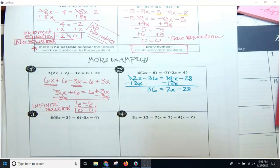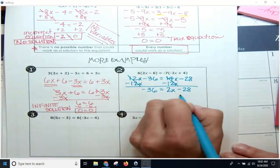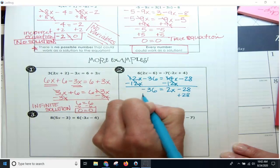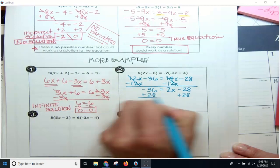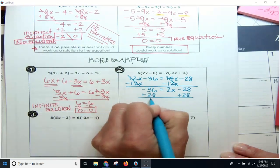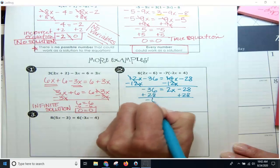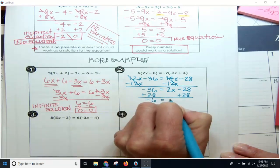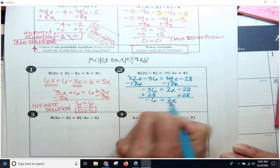Okay, all right. So hopefully you got number one here. Number two, I hope you're getting at least this far. Now you get to this point, you're going to add 28 to both sides. We're going to subtract, and that's going to be negative 6 equals 2x.